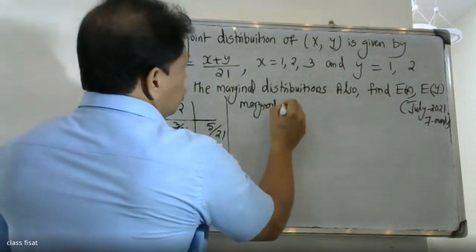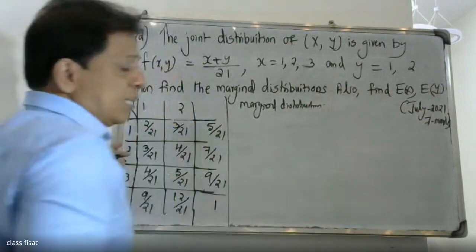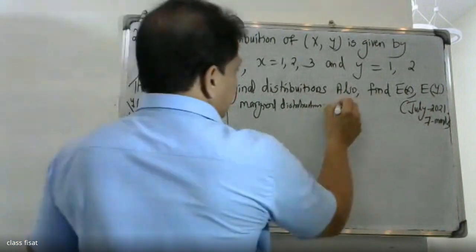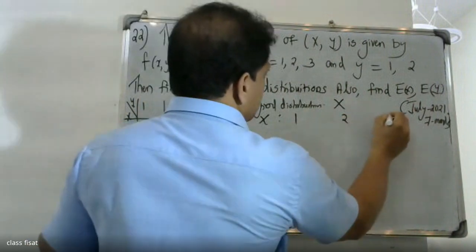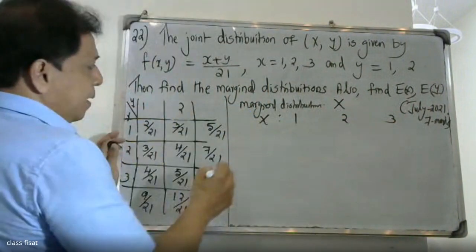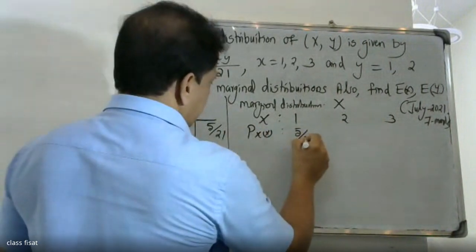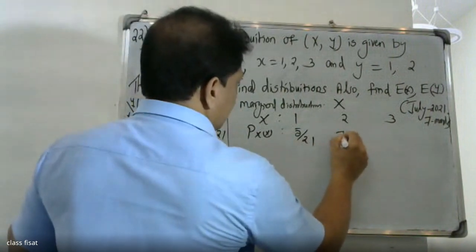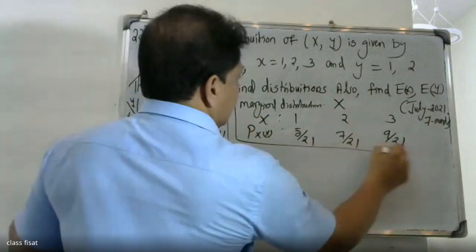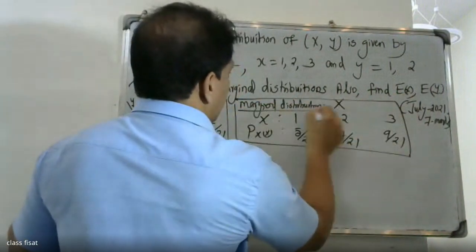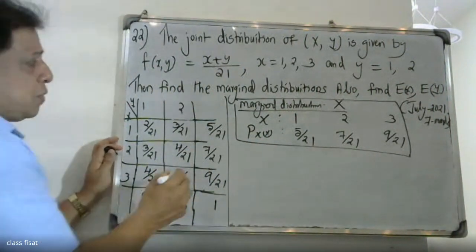For the marginal distribution of X, with x taking values 1, 2, 3: P_X(x) equals 5/21 when x=1, 7/21 when x=2, and 9/21 when x=3. This gives us the marginal distribution of X.